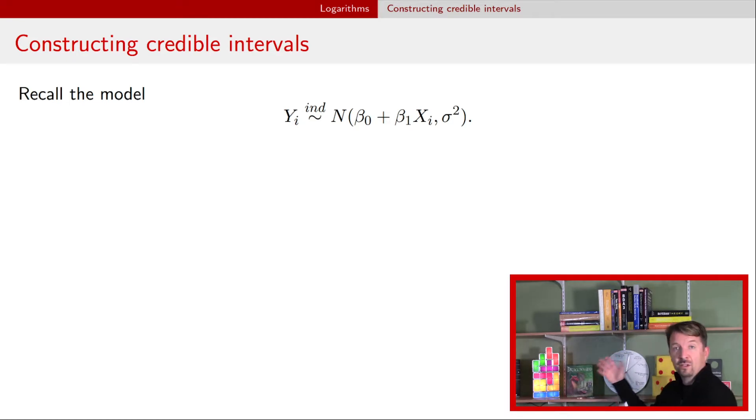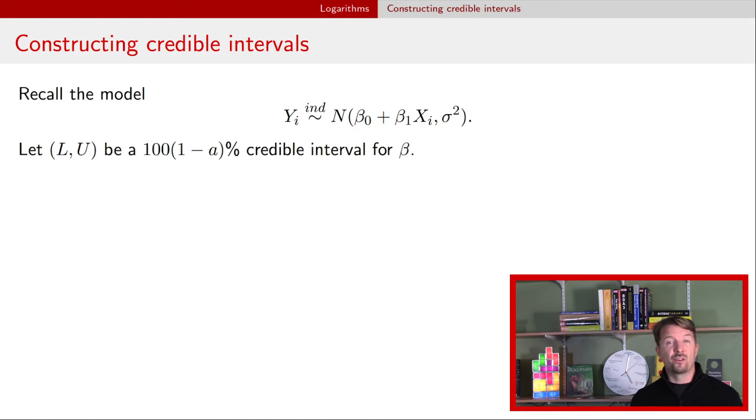I just want to remind you, we have our simple linear regression model, and we have a credible interval that we can construct for either the parameters, the beta0 or the beta1. So let's say for one of them, we have a credible interval that's LU. And we know from previous videos, this is also a confidence interval. So you could use either word. We've got this interval LU, L is the lower endpoint, U is the upper endpoint of this interval that says we should believe that this parameter is inside this interval with a certain percentage. That's that 100(1 minus α).